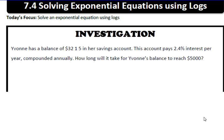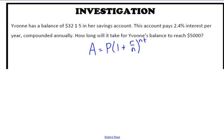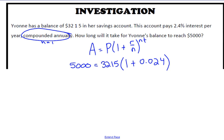Which formula are we using? The one we used last unit. A equals P times 1 plus r over n to the power of nt. Since it's compounded annually, n is 1, so the formula simplifies to just t.